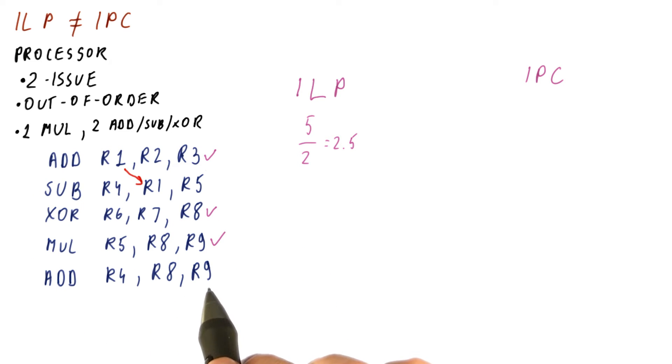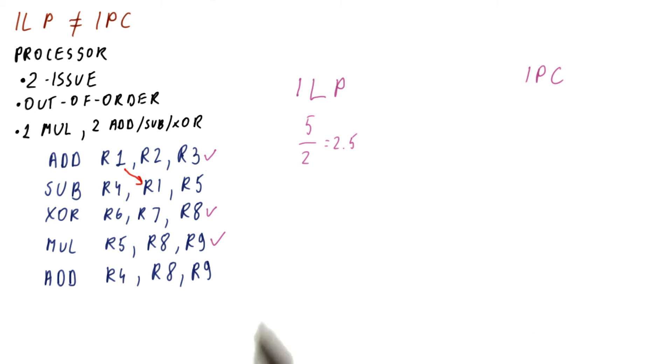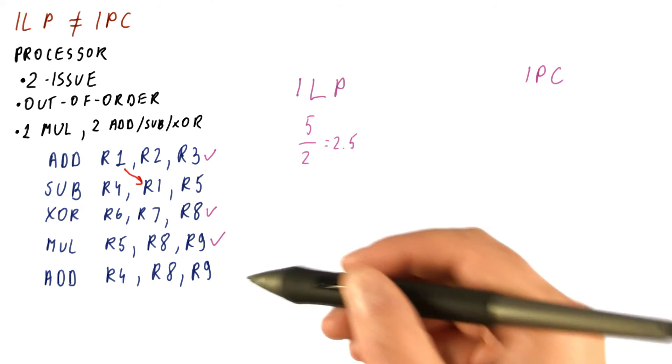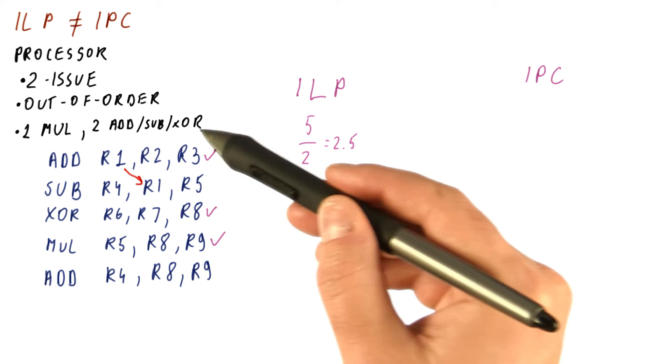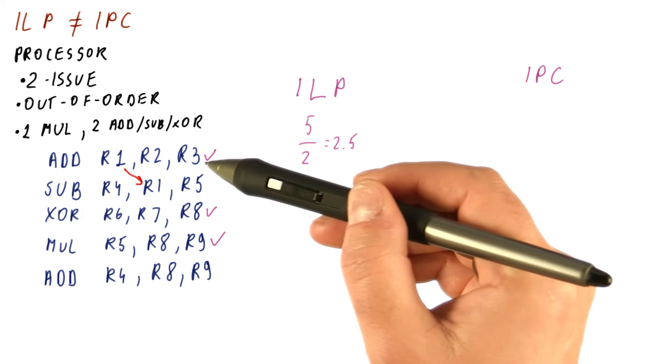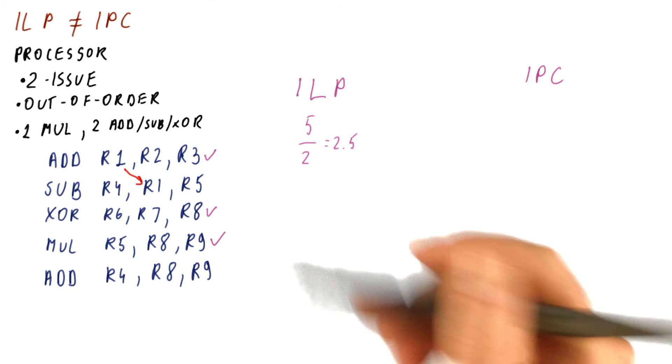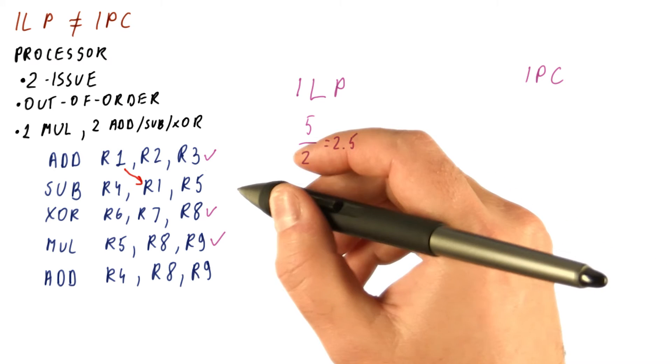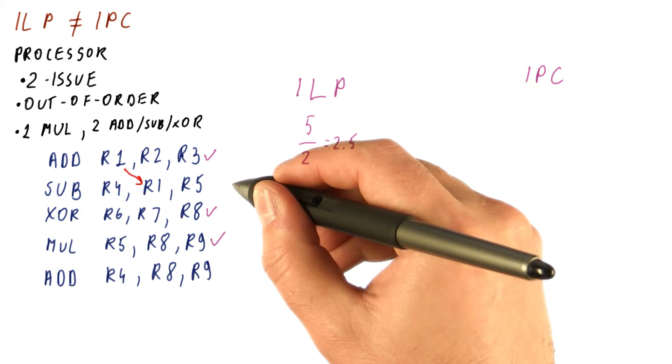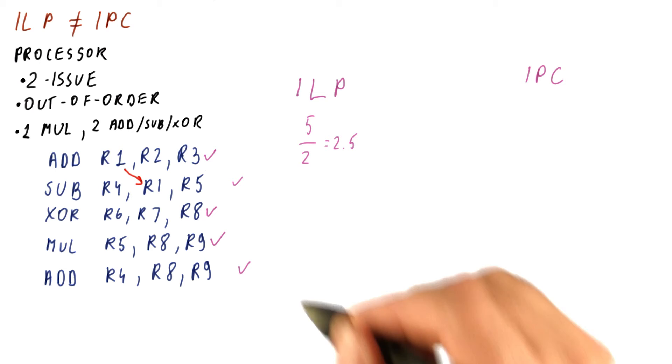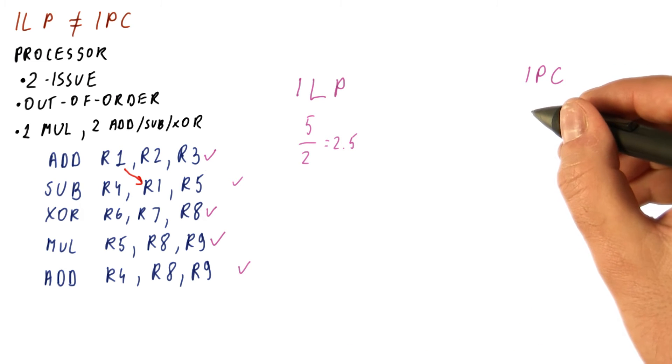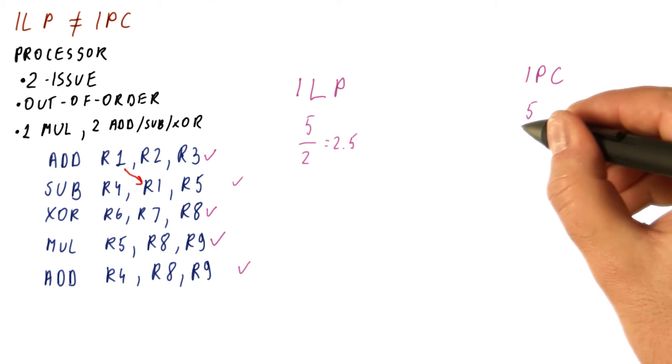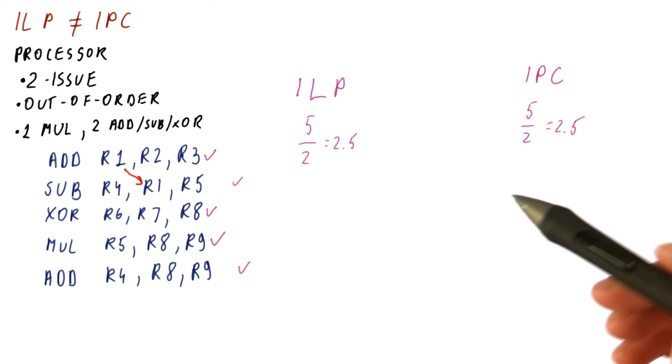But for example, this instruction here cannot be done in the first cycle, unlike when we computed the ILP. It cannot be done because we only have two add, subtract, XOR, et cetera, units, and we have already consumed both of them in the first cycle for the add and the XOR. So in the second cycle now, we can do this and this. So it turns out that our IPC is still five instructions over two cycles equals 2.5, but it doesn't have to be that way.